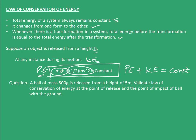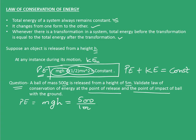We will use the question we just solved to validate this law of conservation of energy. Again, I have a ball of mass 500 grams — in this case it is released from a height of 5 meters. We have been asked to validate the law of conservation of energy at the point of release and the point of impact. At the point of release, velocity is 0, therefore kinetic energy is 0. The total energy present in the ball at that point is its potential energy, mgh. So this will be 500/1000 into 10 into 5, giving potential energy equal to 25 joules.